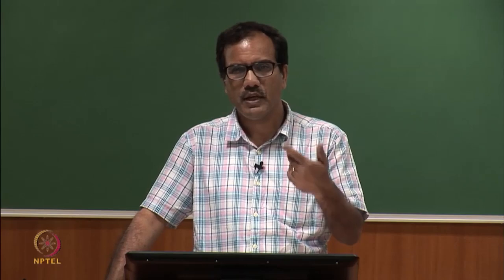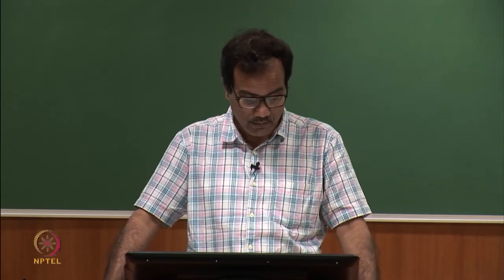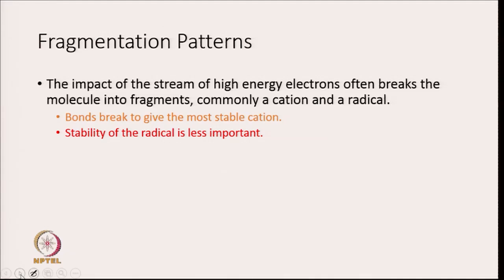We can also look at the fragmentation pattern to know the structure of the molecule. When a beam of high energy electrons is bombarded on the molecule, the molecule may break into fragments — one fragment will exist as a cation, while another will exist as a radical. Bonds break to give the most stable cation; the stability of the radical is less important.